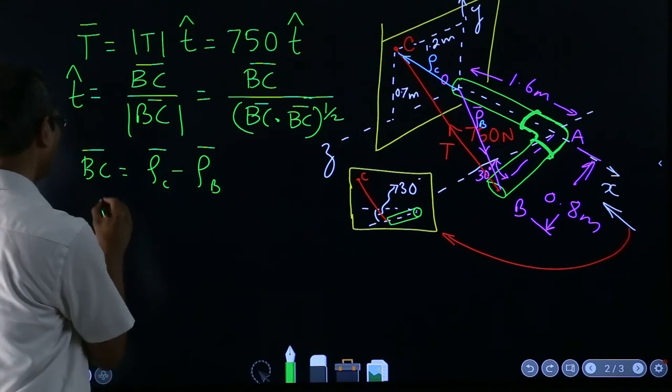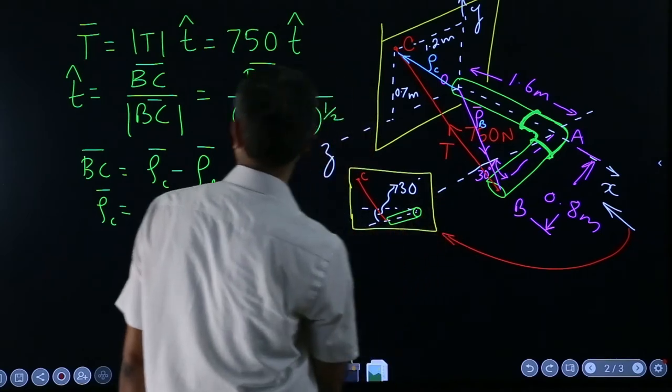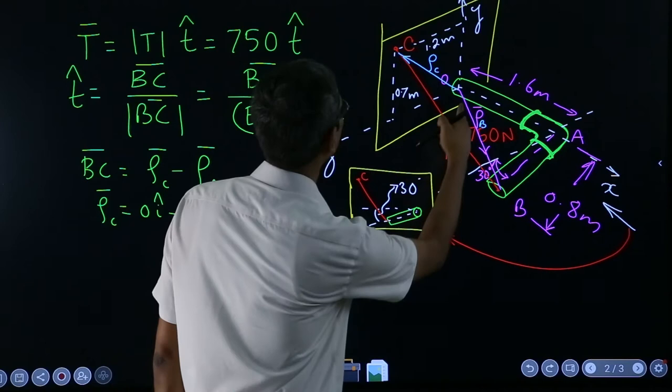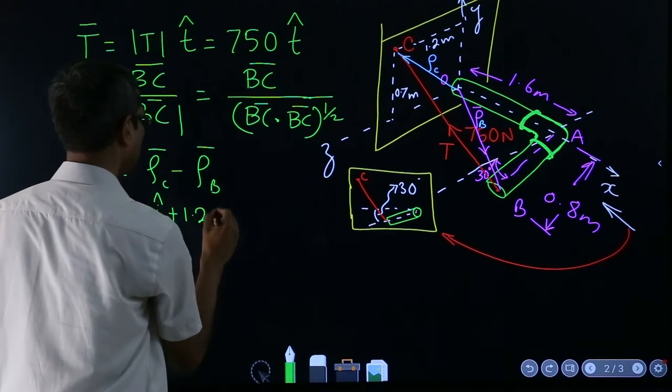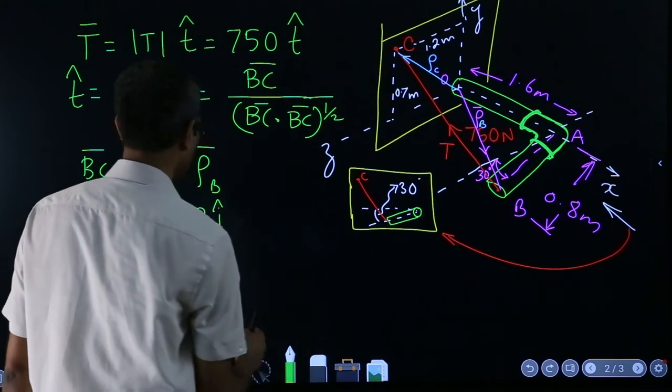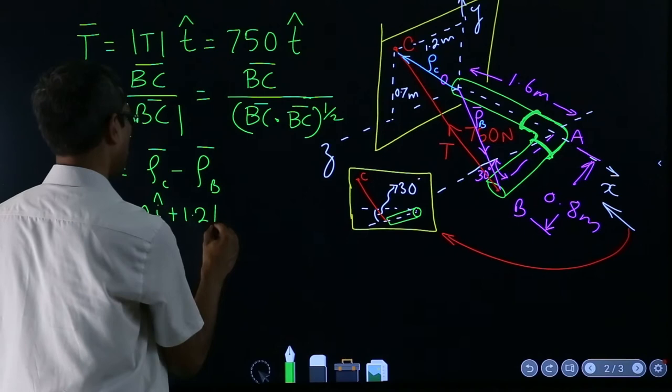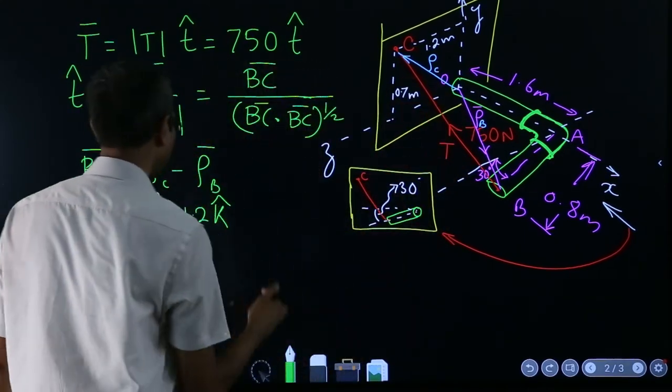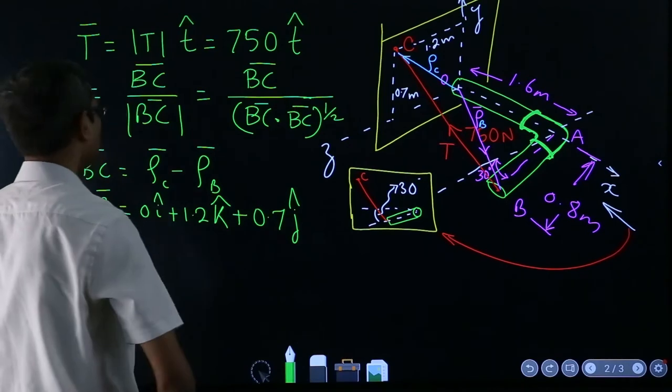ρC is very easy. ρC is clearly given - it does not have any component in the x direction, so 0i. Then in the positive direction it is 1.2 meters, but this is the z direction, so 1.2k. In the y direction this is 0.7, so plus 0.7j. This is ρC.